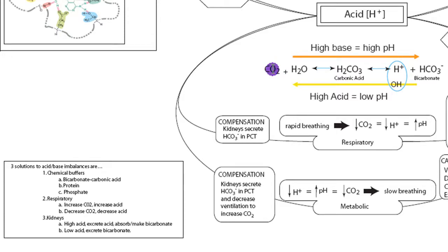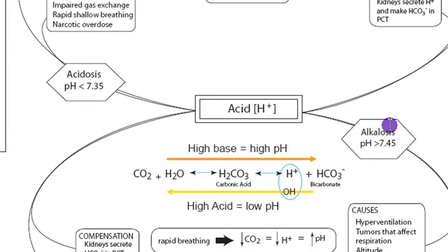The respiratory system can either retain CO2 to increase acid, or get rid of CO2 to decrease acid. This system is also important because it ties in with the kidneys, which can excrete or retain hydrogen ion, excrete bicarbonate, or even manufacture bicarbonate.